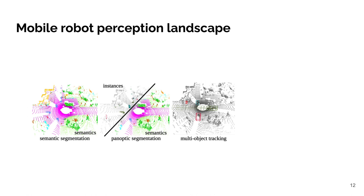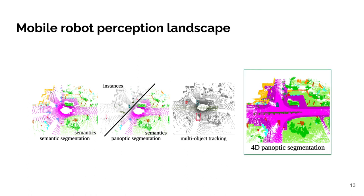In more recent years we have seen a stronger focus on segmentation tasks. That includes semantic segmentation, instance segmentation, as well as the combination of both, which is panoptic segmentation. At the same time, research in the field of tracking has advanced and we have seen a lot of work tackling the tracking of multiple objects in 3D. Most recently, the task of 4D panoptic lidar segmentation was introduced that requires the segmentation and tracking of every point. This task has also been part of our challenges this year.